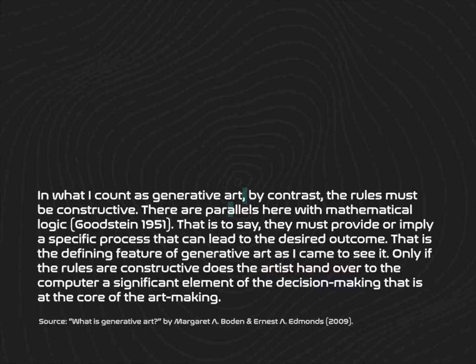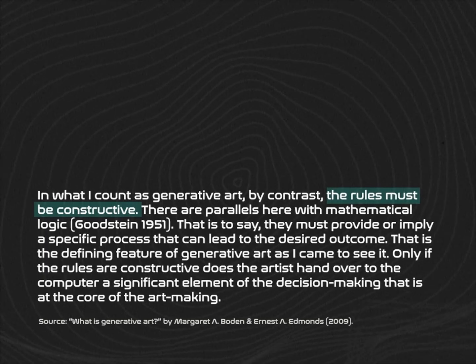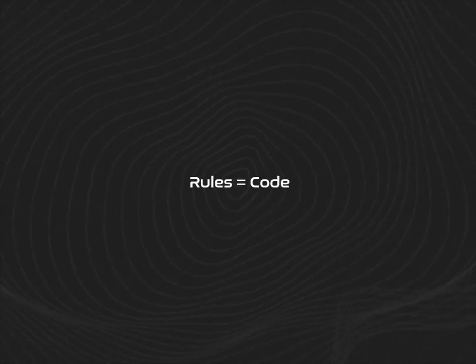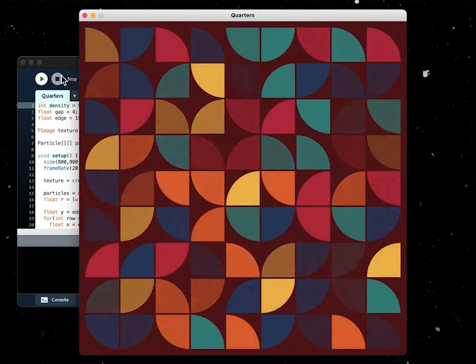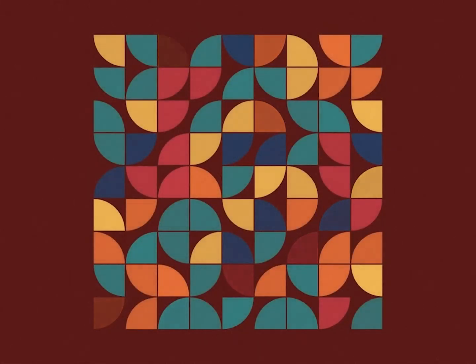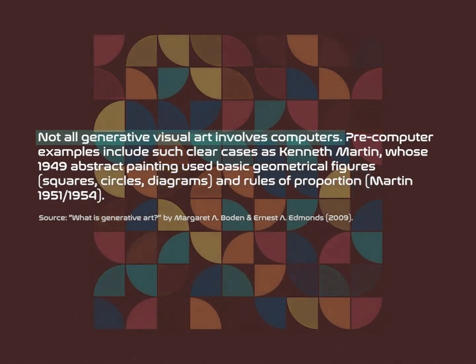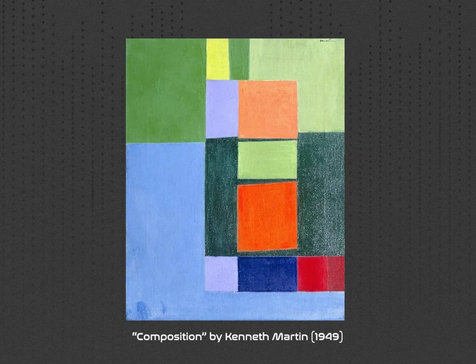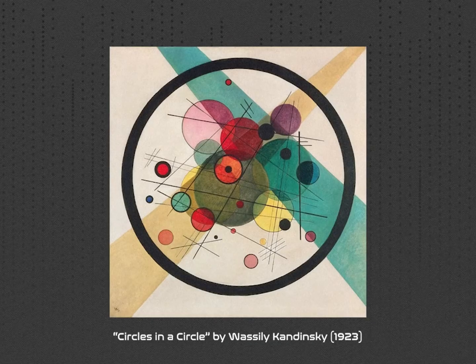What makes generative art stand out from any other art is that, first, the initial rules are crucial and must be constructive. These rules can be implemented through lines of code, which is why coding is a vital aspect of generative art. Although not all generative art involves computers — pre-computer examples use basic geometrical figures or calculable instructions.